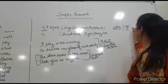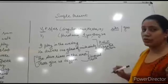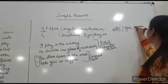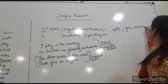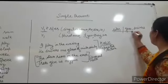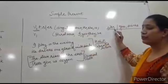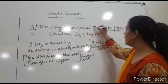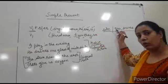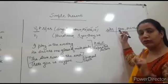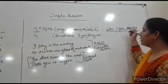Suppose here go word is there. At that time, we use ES: goes. Suppose drink is there, so we add S. When singular noun is there, then we use V1 plus S/ES, and with the pronouns he, she, it, we also add S or ES.